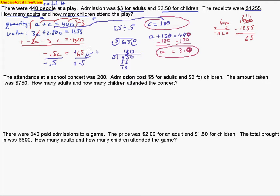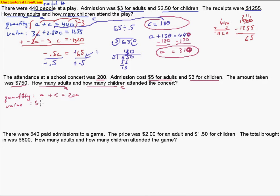Let's take a look at the next problem. The attendance at a school concert was 200 people altogether. The cost of an adult ticket was $5, a children's ticket $3, and the amount taken was $750. They're asking how many adults and how many children. We'll do the same thing: set up unknowns A for adults and C for the number of children. The quantity equation — how many we end up having — is A plus C equals 200. Then we have our value equation where the dollar signs come in: $5 times A plus $3 times C equals $750.